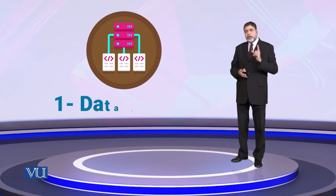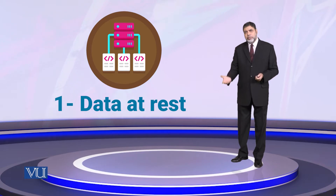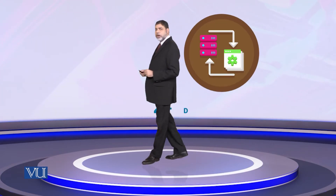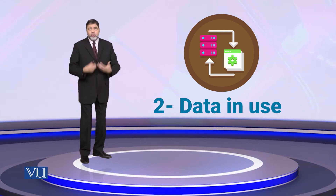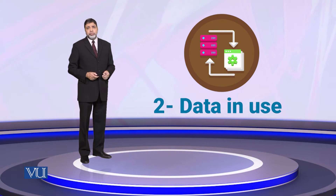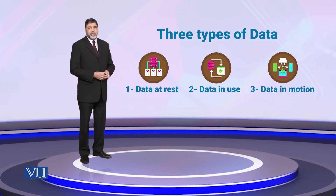Security کی بہت ساری dimensions ہیں۔ ہم data کو تین حصوں میں divide کرتے ہیں: پہلا data at rest — جو data آپ کی file میں، hard disk پہ، یا database میں stored ہے۔ دوسرا data in use — جو data actually processing ہو رہی ہے، memory میں load ہوا ہے، CPU پہ ہے، register میں ہے۔ تیسرا data in motion — ایک machine سے دوسری machine پہ data جو جا رہا ہے۔